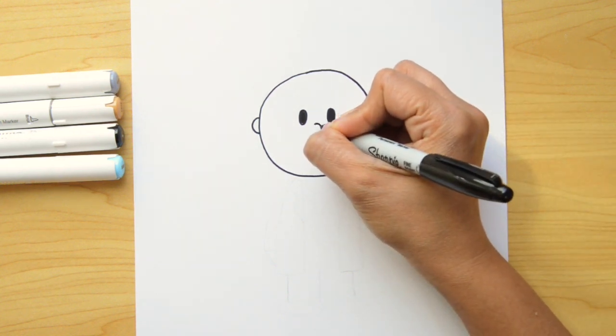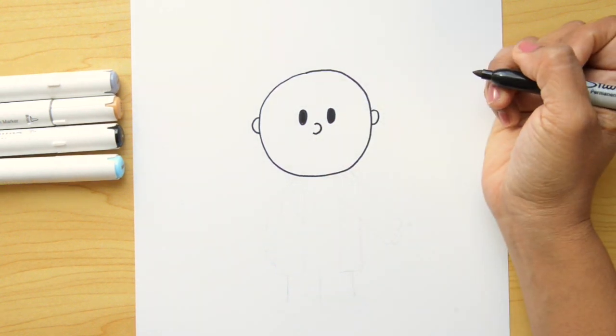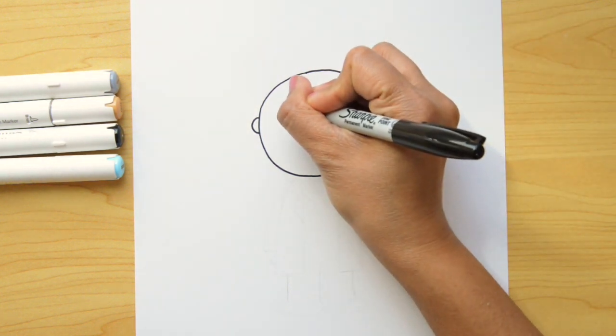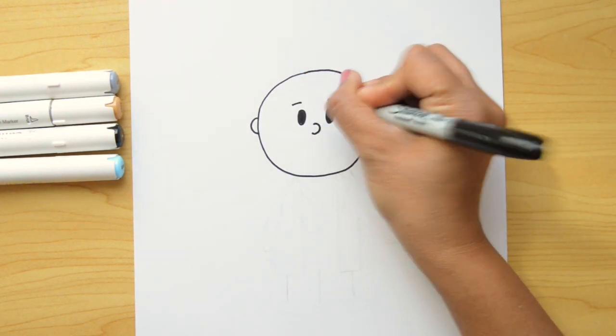Now the nose is a C shape, backward C shape in the middle of the eyes and I'm gonna put eyebrows, two little lines.